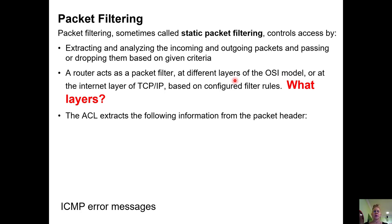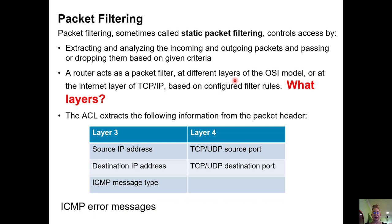What layers does an ACL function at? We know the OSI model. An ACL is going to function at layer three and layer four. At layer three, we can work with source and destination and ICMP messages. At layer four, we can start looking at actual protocols, port numbers, and things like that. So packet filtering happens at layer three and layer four.